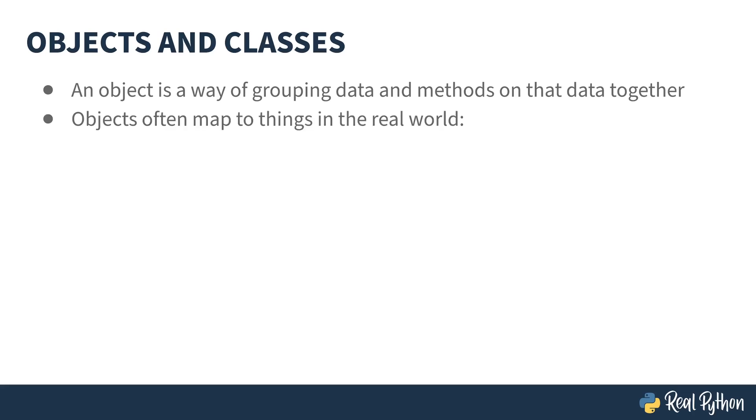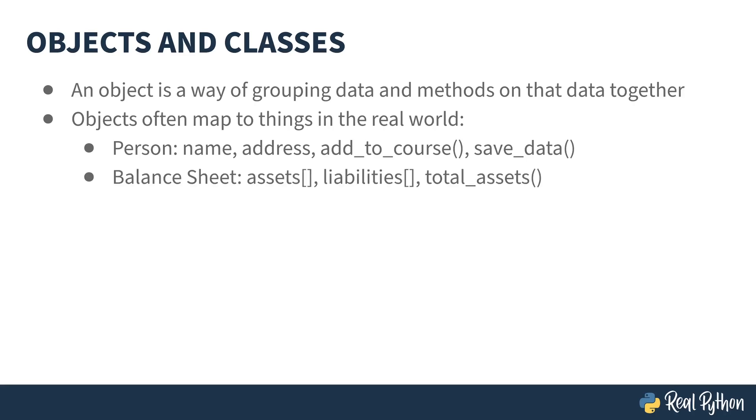Frequently, an object maps to something in the real world. If you're writing software that describes a class schedule, you might have a person object with a name and address attribute and methods on that for adding that person to a course or saving their data. Similarly, if you were writing accounting software, your balance sheet object might have a list of assets and a list of liabilities as the attributes and a method for totaling the assets or taking a report.